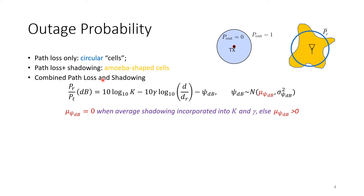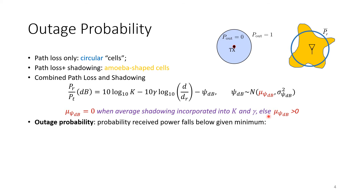Combining path loss and shadowing is the more interesting case. We have a deterministic term and a random Gaussian term. If the average shadowing is already included in the path loss model, the mean of the Gaussian becomes zero. If it's not included, the mean becomes a positive quantity. The outage probability is the probability that received power falls below the threshold.